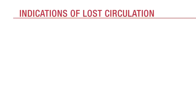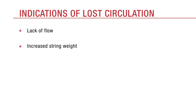The most obvious indication of lost circulation is no flow. The flow of drilling fluid across the shakers will stop. Other indications of lost circulation include when the flow indicator decreases to zero, an increase in string weight, or an increase in pump speed if the rig is not equipped with constant speed pumps.